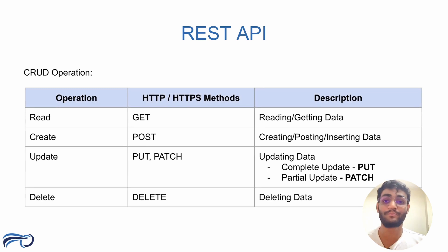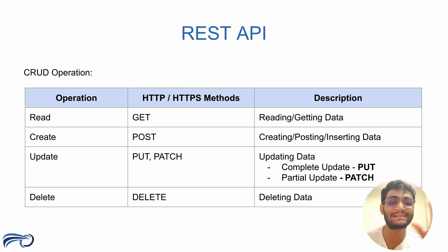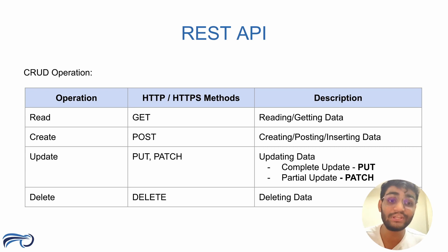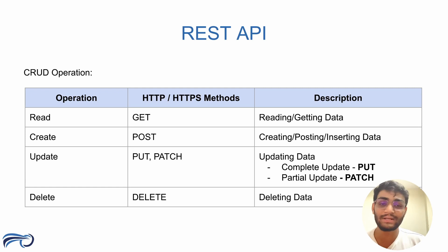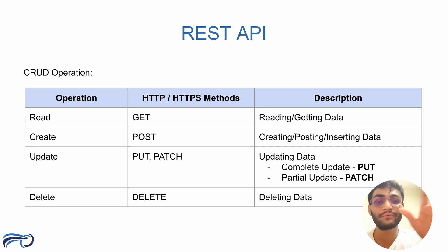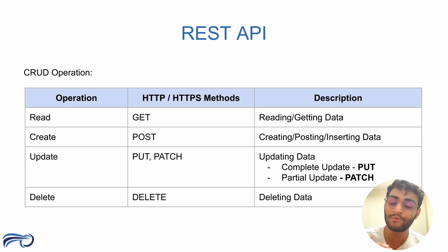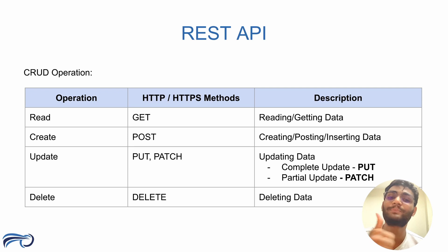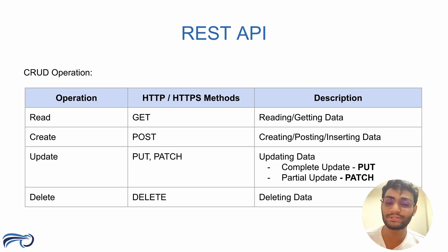There are different kinds of methods that CRUD operations use. If you want to get data from the database, we use the GET method. If you want to create new data in the database, we use the POST method. If you want to update data, there are two types: if you want to update all the columns in a table, we use the PUT method. If you want to do a partial update — one, two, or three columns — we use the PATCH method. If you want to delete a row from the database, we use the DELETE method.